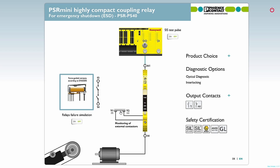Now let's take a closer look at the start circuit. Here you can monitor the external load contacts — in this example, it is K1 and K2. Let's assume we have a failure in the external load contacts. We try to switch on, and the relay detects the external load contact failure and it doesn't start.